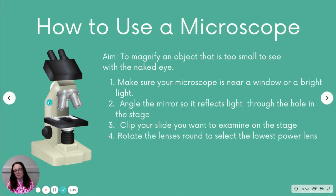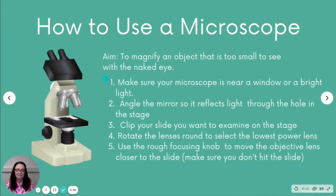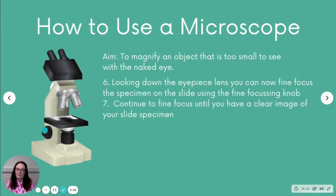These lenses can be rotated — you want to start with the lowest power lens, so the lowest number, which might be 5 or 10, with higher ones at maybe 20, 30, or 50. Use the rough focusing knob to move the objective lens closer to the slide — make sure you don't hit the slide as that could smash it. Then look down the eyepiece; you should be able to see an outline or blur of the specimen, and use the fine focusing knob to get a clearer image.